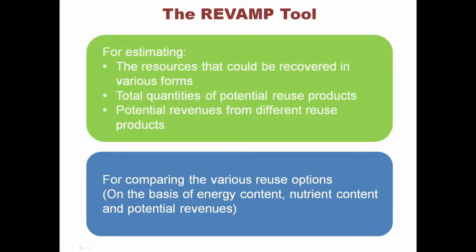This is the motivation for the tool we developed at SEI and KTH. The tool is designed to estimate the reuse products we can get from sanitary waste streams - fecal sludge, sewage sludge, wastewater, and other urban waste flows - as well as the potential revenues from these reuse products if the necessary investments are made. The tool can also compare different resource recovery options.